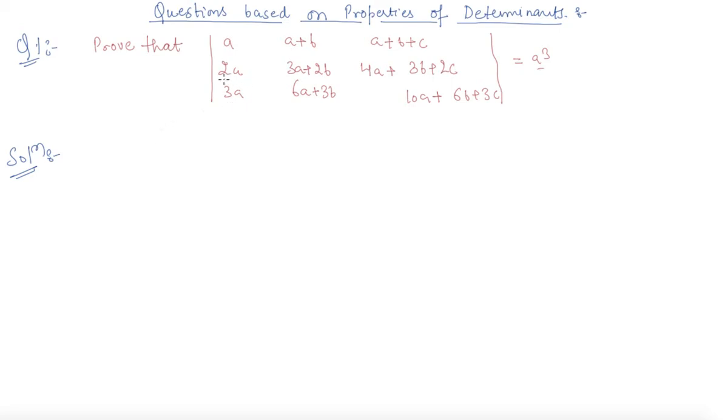As I am seeing here, this value is almost double of first row, so I will apply the operation R2 goes to R2 minus 2R1, and simultaneously I will apply the operation on R3 where R3 goes to R3 minus 3R1. What we are left with: first row remains the same, a, 2a, a+b+c. 2a minus 2 times a becomes 0, 3a plus 2b minus 2a minus 2b we are left with a only, then we are left with 2a plus b only here.